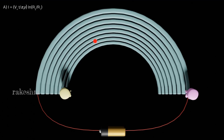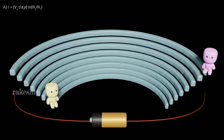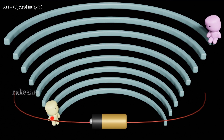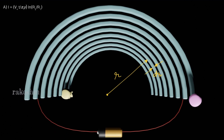We are cutting this conductor into many pieces. All pieces at one end are at the same potential and the other ends are also at the same potential. So all these pieces are connected in parallel. Let us consider one piece at radius r with width dr.